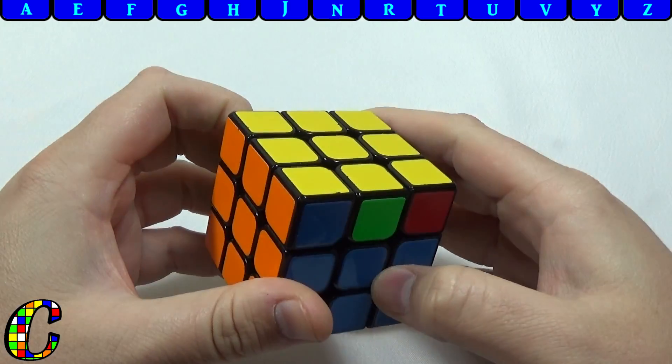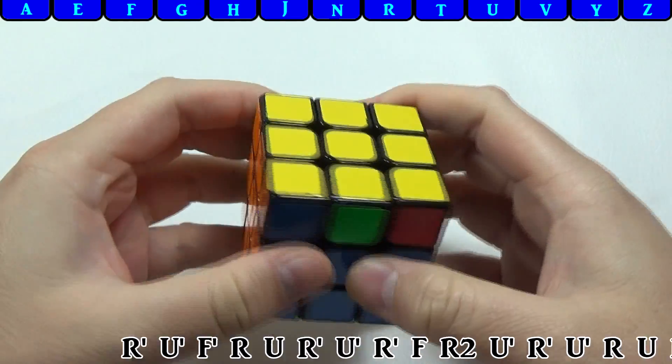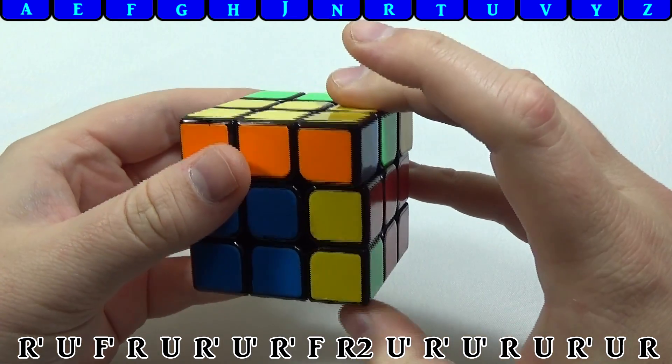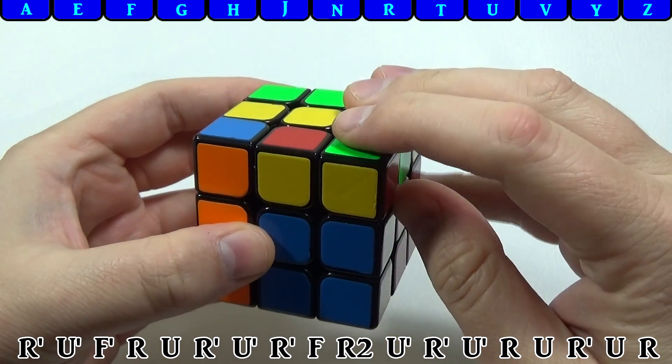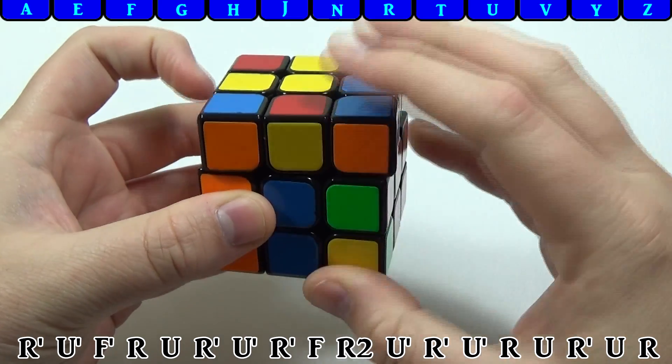So in order to execute this case, you want to put the bar on the left side and do this algorithm: R prime, U prime, F prime with your thumb, R, U, R prime, U prime, re-grip,